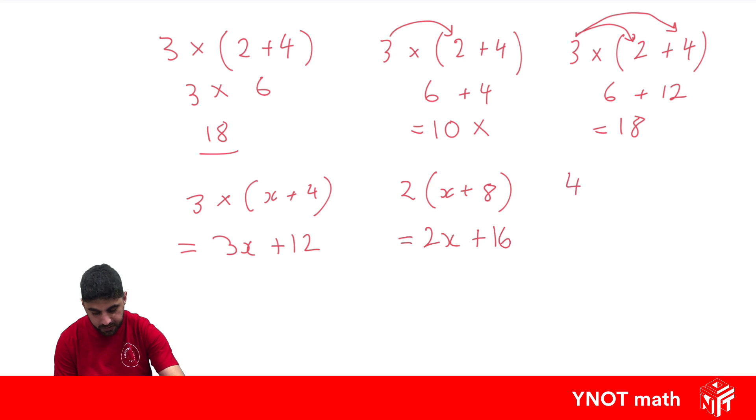Let's look at another one. 4 outside of x minus 5. So we're going to do 4 times x and 4 times the negative 5. 4 times x gives us 4x and 4 times the negative 5 gives us negative 20.